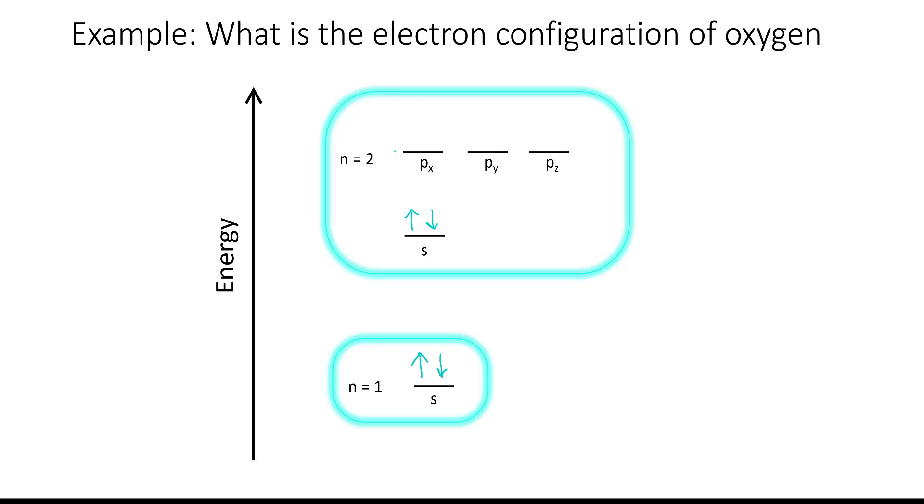Now we have four electrons left over to be filled into these 2p orbitals. And remember from Hund's rule, we have to spread the electrons out into as many orbitals as possible. So let's put the three electrons spin unpaired into each of these 2p orbitals. And we have one more electron left, and now we can spin pair it into one of the existing 2p orbitals.